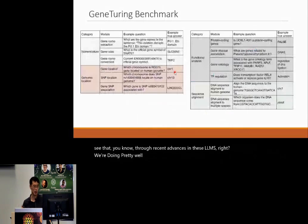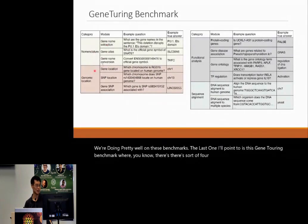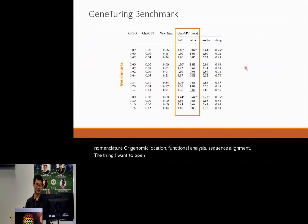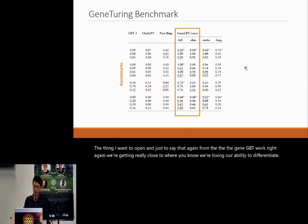The last benchmark I'll point to is the gene-touring benchmark, with four categories relating to nomenclature, genomic location, functional analysis, and sequence alignment. From the GeneGPT work, we're getting really close to where we're losing our ability to differentiate the power of these methods. My conclusion is that our benchmarks are getting too easy — we need more challenging ones.